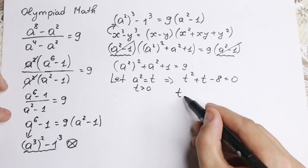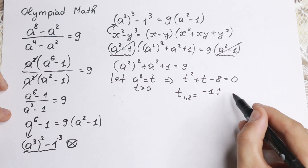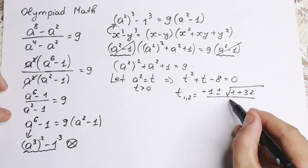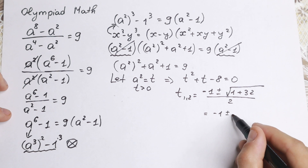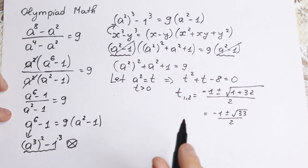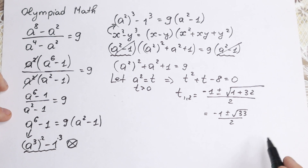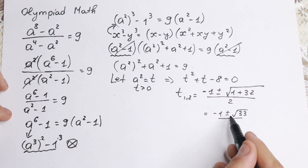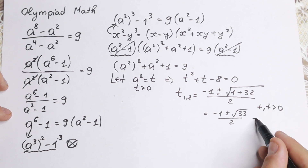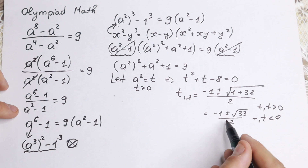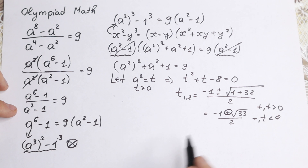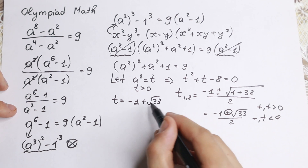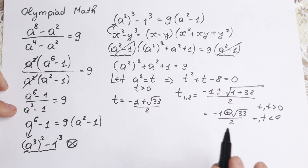We have a quadratic equation. We solve it using the quadratic formula: t equals minus b plus or minus square root of b squared minus 4ac, all over 2. So t equals minus 1 plus or minus square root of 1 plus 32, all over 2, which gives minus 1 plus or minus square root of 33, over 2. We have a positive discriminant, which is good. However, we need to reject the negative root — with the minus sign the numerator is negative, but t must be positive — so we only keep t equals minus 1 plus square root of 33, all over 2.